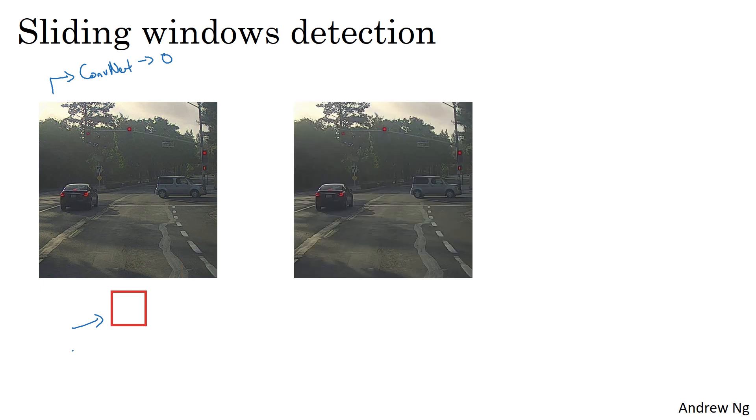Having done this once with running this sliding window through the image, you then repeat it, but now use a larger window. You take a slightly larger region and run that region. Resize this region into whatever input size the ConvNet is expecting, feed that to the ConvNet and have it output 0 or 1. Then slide the window over again using some stride, and run that throughout your entire image until you get to the end.